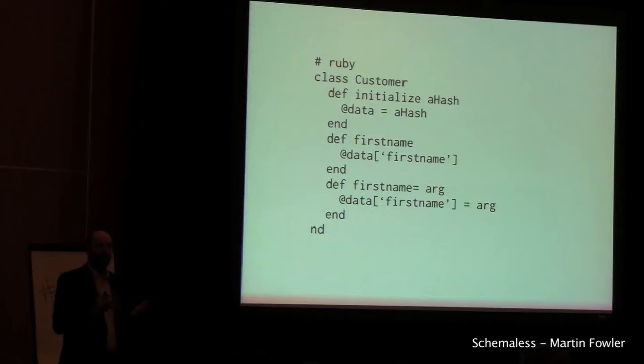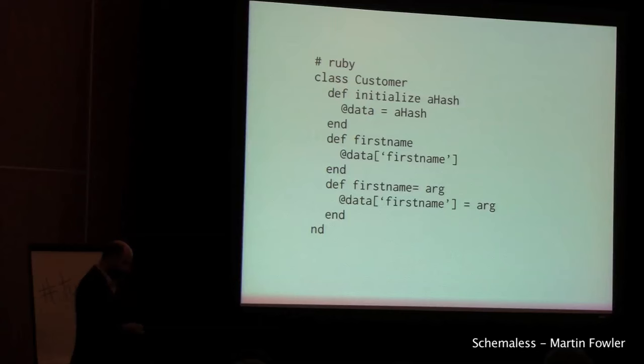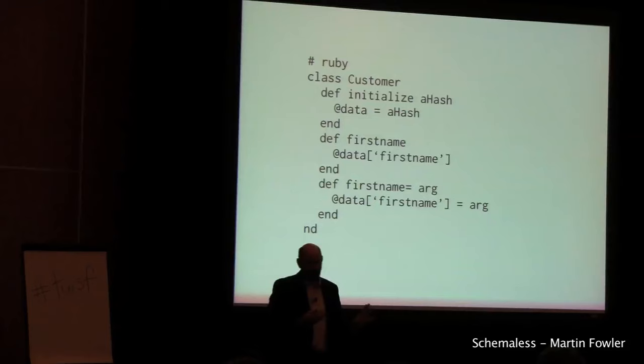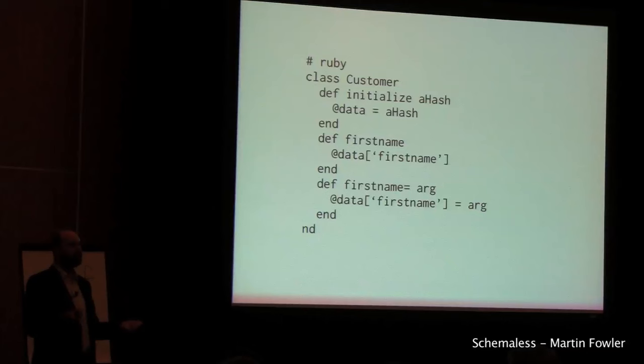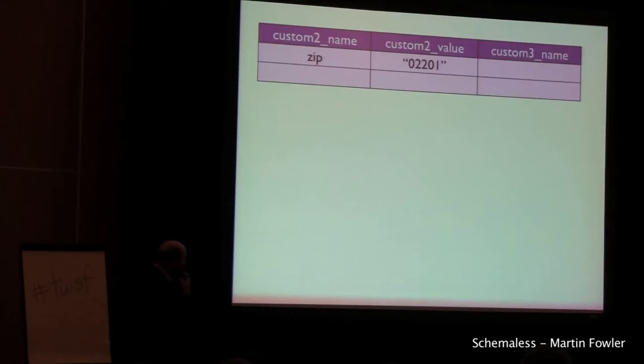The whole point of object orientation — or at least the encapsulation part — is that we can present an interface that's different from our internal data structure. We can do schemas and schemaless stuff in memory, and it's also very common to see people do schemaless data structures in relational databases, which sounds odd because the whole point of relational databases is they have a schema — but it's very common.